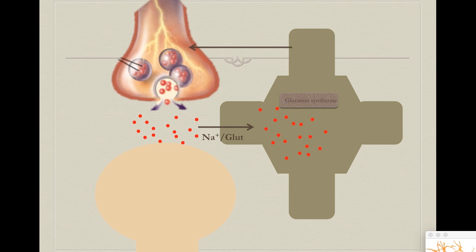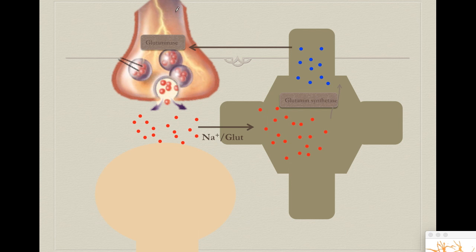Once astrocytes are filled with glutamate, they have to metabolize it. Astrocytes are very rich in an enzyme called glutamine synthetase. This enzyme grabs glutamate and adheres another amino group to it, generating an amino acid with two amino groups called glutamine. Glutamine is no longer able to activate neurons, so it can be donated back to the neurons.